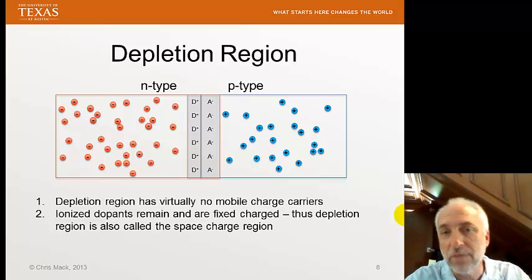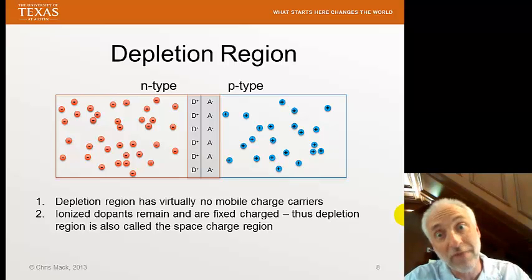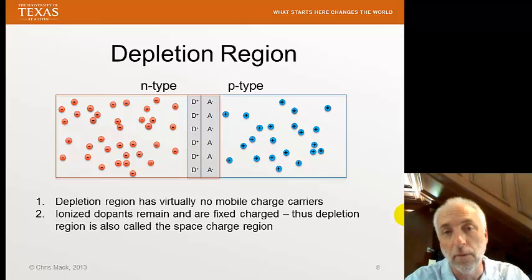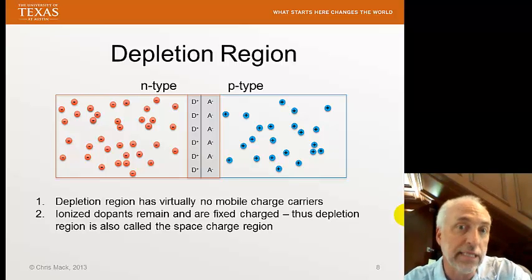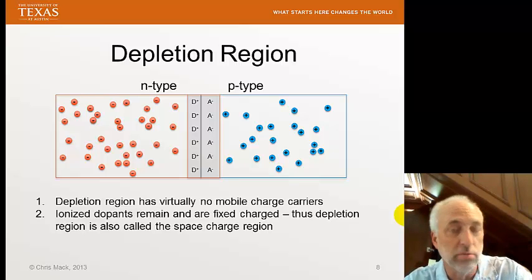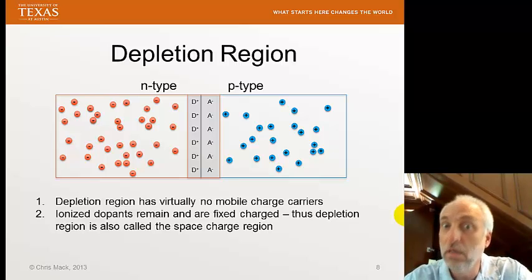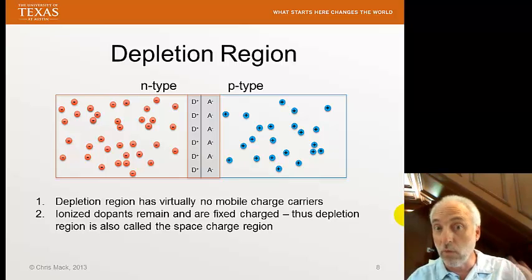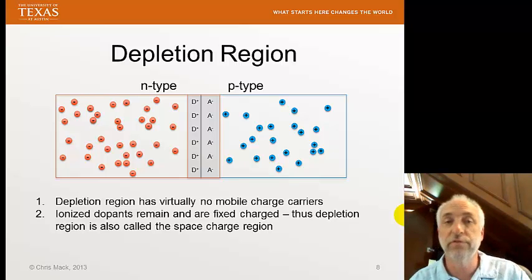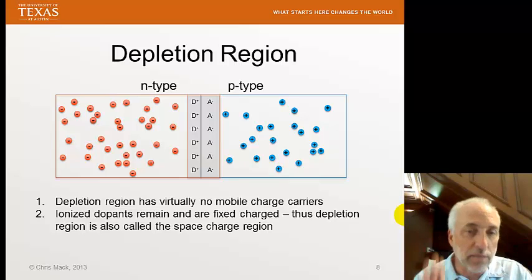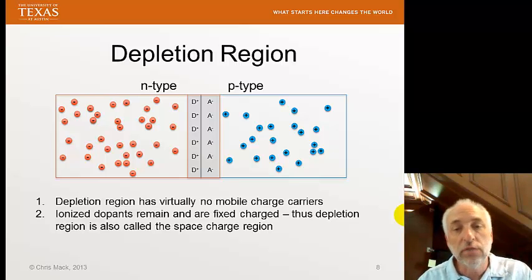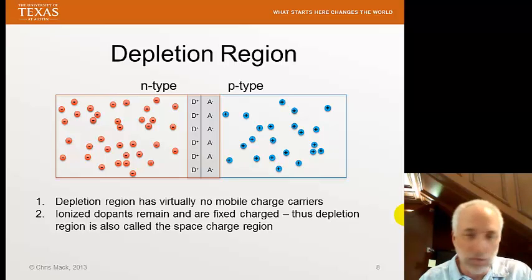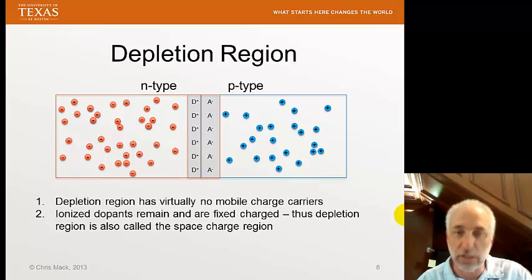But in the depletion region, the mobile holes and electrons have been depleted, leaving only the ionized dopants. These are fixed and separated: positive ionized donors on the N-type side, negative ionized acceptors on the P-type side. This separation of charge is also called a space charge region. We use those terms interchangeably — depletion region and space charge region mean the same thing. One describes how mobile carriers are depleted; the other describes how fixed charge is separated in space.